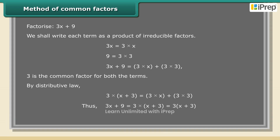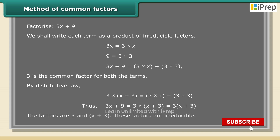Thus, 3x plus 9 is equal to 3 into (x plus 3). The factors are 3 and (x plus 3). These factors are irreducible.